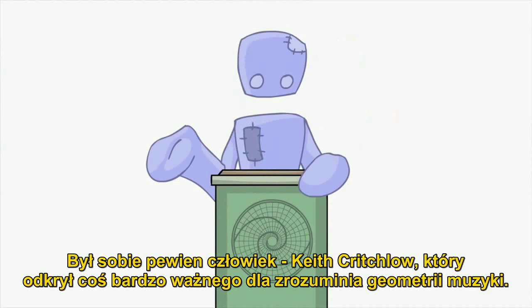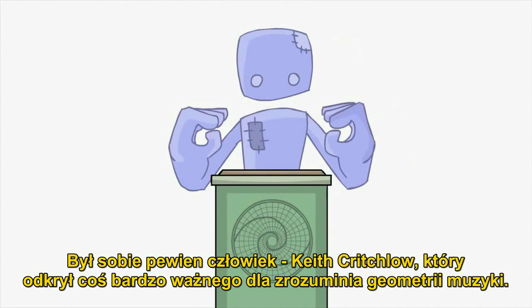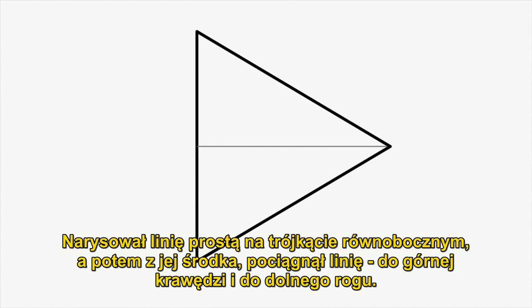There was a man named Keith Critchlow who discovered something very important to understanding the geometry of music. First, he drew a straight line through an equilateral triangle, and then he measured from the middle of the center line and drew a straight line up to the top edge and back down to the bottom corner.